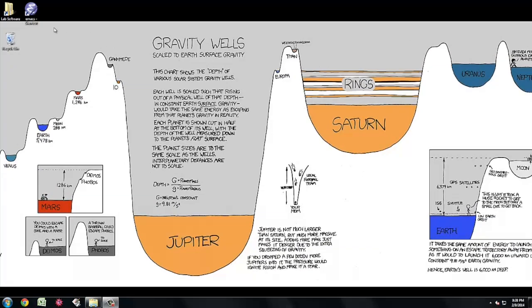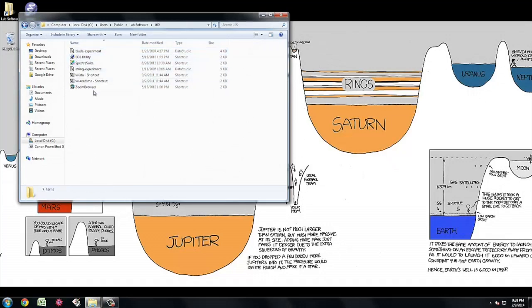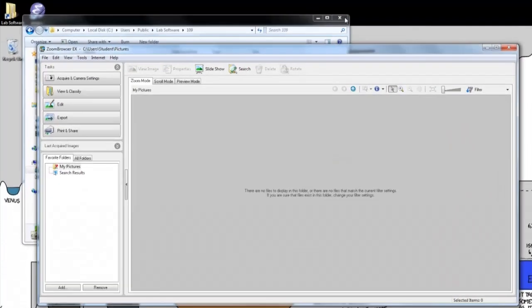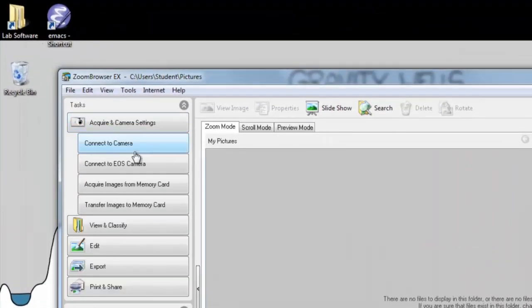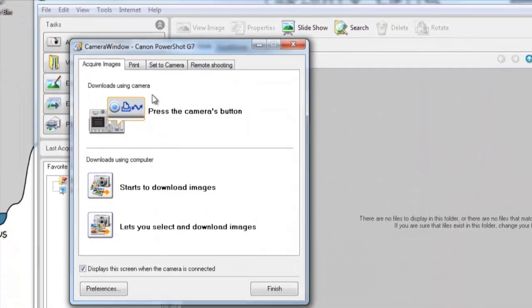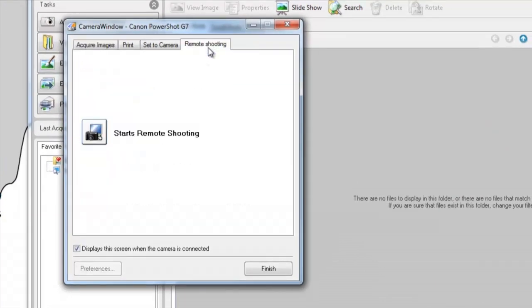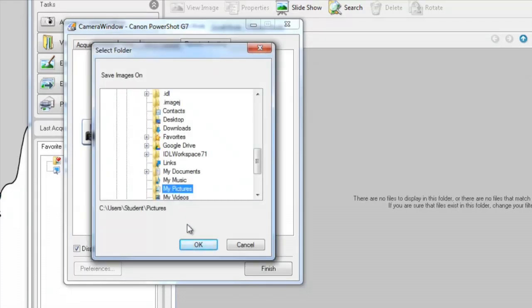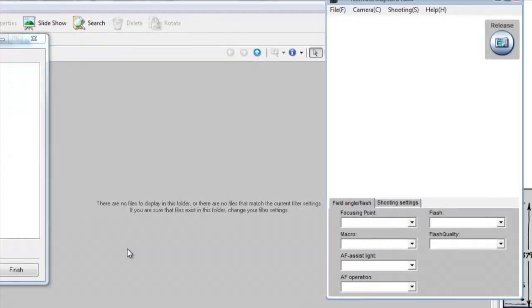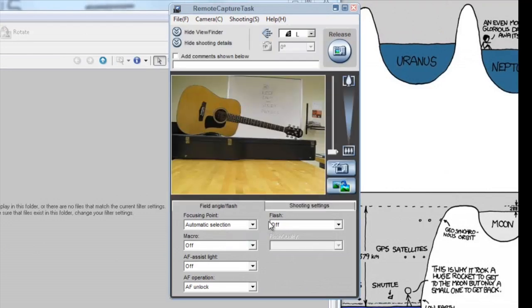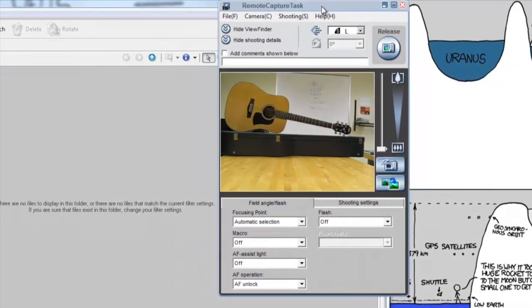To begin the lab switch on the camera and connect to the computer. Then open up the Zoom Browser X software that you'll be using to control the camera. Click on acquire and camera settings and then connect to the camera. Then select the remote shooting tab and click start remote shooting. Select the folder where you want to save the images. The camera is now connected and you can set the camera settings.